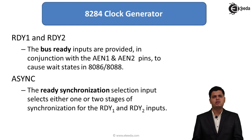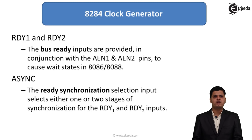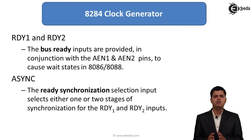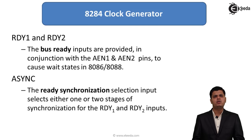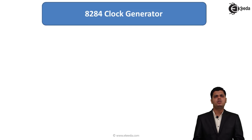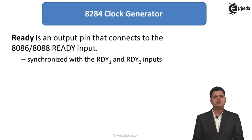The next signal is ASYNC, the ready synchronization selection input. It selects either one or two stages of synchronization of the RDY1 and RDY2 inputs. How many stages of ready signals are to be used depends upon the ASYNC signal.